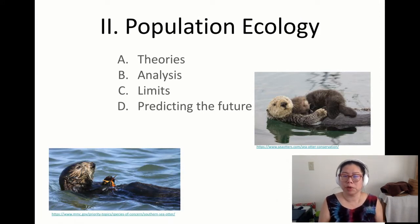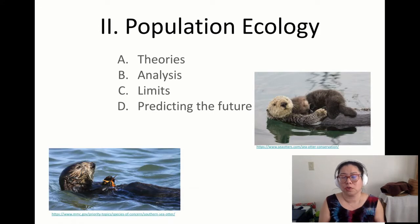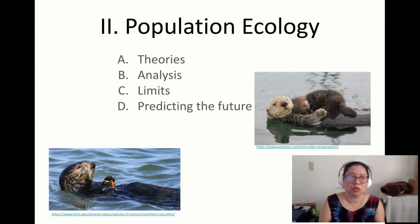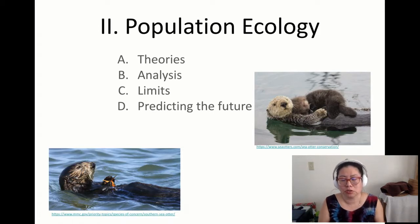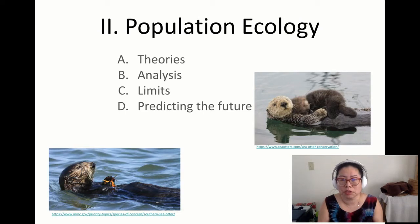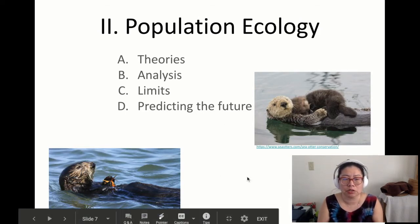Why are we looking at populations and taking time to survey organisms? One reason is to better understand how they are living so that we can better help conserve and protect them, since us humans have been the ones destroying their habitats and putting them in danger. For today's lecture we're going to be using the southern sea otter, also called Enhydra lutris, as our example. Here we have a sea otter with its pup, and a sea otter on its belly feeding.